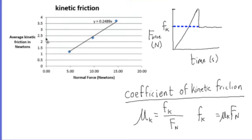And I made a graph with the kinetic friction on the y-axis and the normal force on the x-axis. Now the slope of the line is the ratio of the kinetic frictional force to the normal force. And as you might guess, we call that the coefficient of kinetic friction.